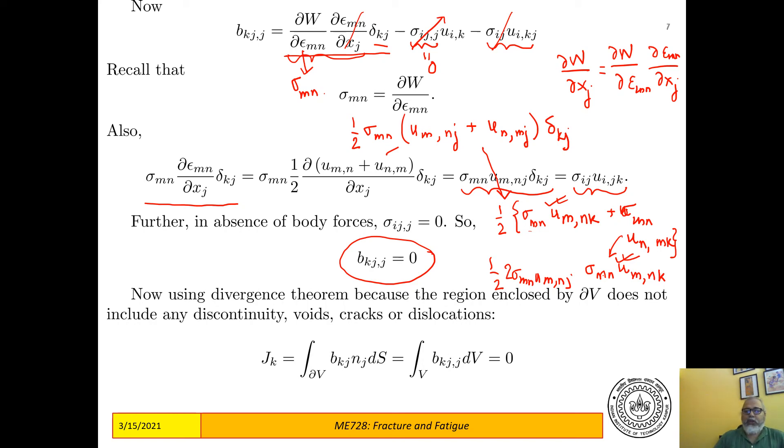So now this is my J_k as defined in the previous slide, B_kj n_j. So B_kj n_j can be written as, using divergence theorem, this can be written as B_kj,j dV, provided the volume V is devoid of any discontinuity like cracks or dislocations, any kinds of defects. If that is the case, then B_kj,j is zero. Therefore J_k is equal to zero.